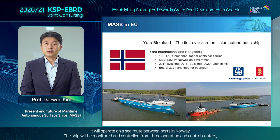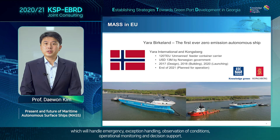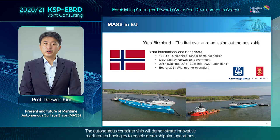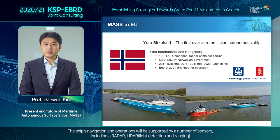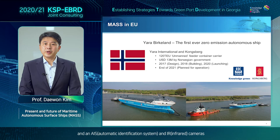It will operate on a sea route between ports in Norway. The ship will be monitored and controlled from three operation and control centers, which will handle emergency and exception handling, observation of conditions, operational monitoring, and decision support. The autonomous container ship will demonstrate innovative maritime technologies to enable green shipping operations. The ship's navigation and operations will be supported by a number of sensors, including radar, AIS, and IR cameras.